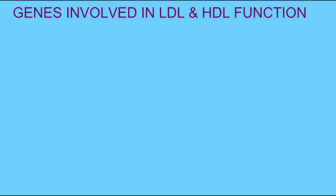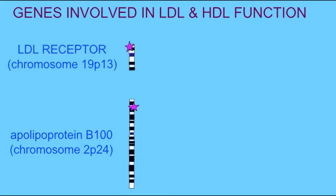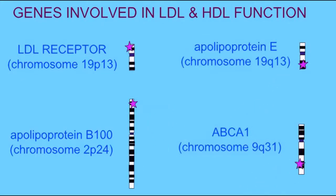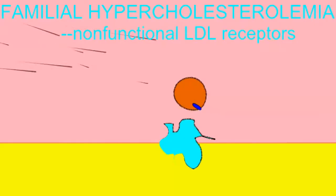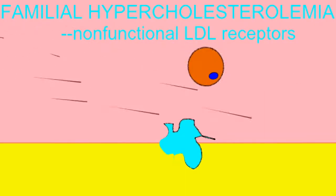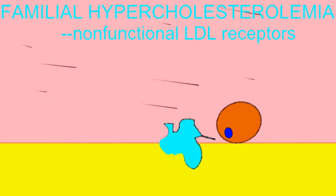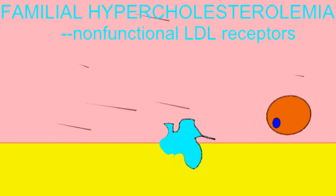Heart disease is a complex multifactorial trait involving the actions of the proteins encoded by many genes, some of which encode proteins which function in forward cholesterol transport, or in reverse cholesterol transport.